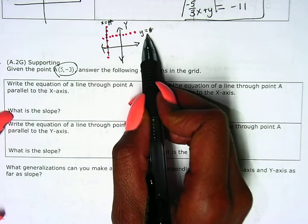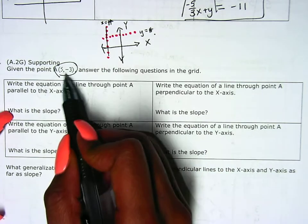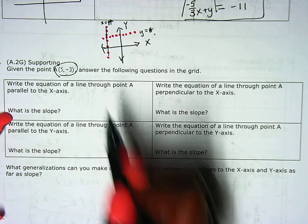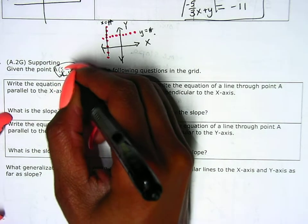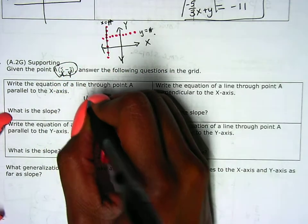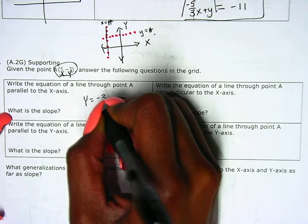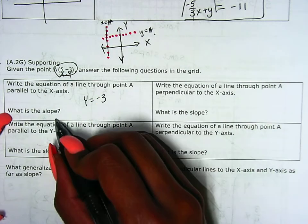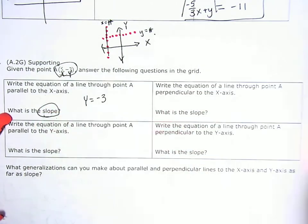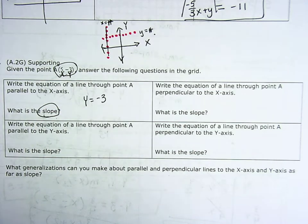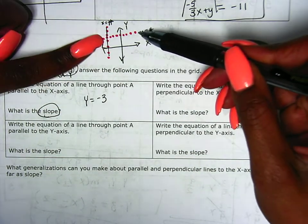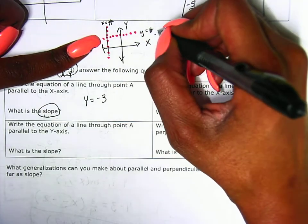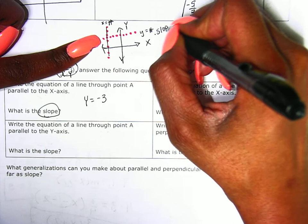It says write the equation of a line through point A that is parallel to the x axis. Parallel to the x axis is y equals a number. And using this point — because we have to make sure we go through this point — we know that y is equal to negative 3. So the equation is y equals negative 3. Lines parallel to the x axis, which are y equals a number, have a slope of 0.